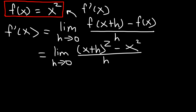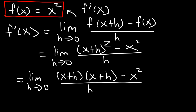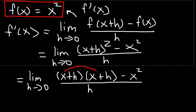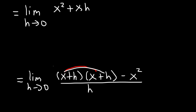We need to FOIL x plus h squared. So what we really have is x plus h times another x plus h. So let's FOIL: x times x is x squared. Then x times h is xh. Then h times x is also xh. And finally h times h is h squared. And then minus x squared, all divided by h.